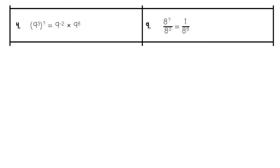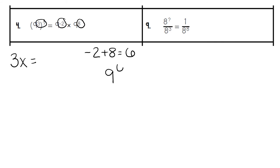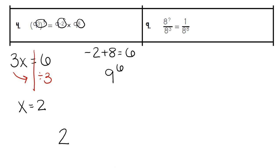For number 4, the first half of the problem is the multiplication part we are missing: 3 times our unknown exponent. We start with the right-hand side, which is being multiplied, so we add our exponents: negative 2 plus 8, which gives us a positive 6 — 9 to the 6th power. We use that to fill in our other problem, since we need the answer to also be 6. We work backwards and divide by 3 to get a final answer of 2. The missing exponent is 2, represented by the letter E at the bottom.